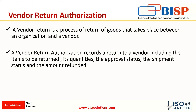First, we will know what is vendor return authorization. A vendor return is a process of return of goods that takes place between an organization and a vendor. For example, when we order a particular item and after receiving it, we come to know that the item is either faulty or not up to our requirement and we want to return it. For that purpose, we initiate the process of vendor return authorization, which is also known as the purchase return.